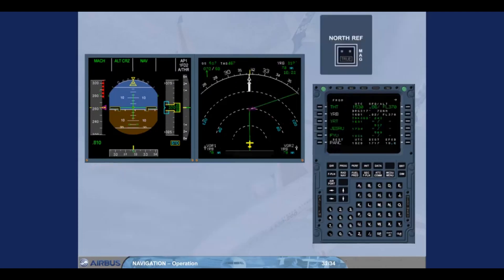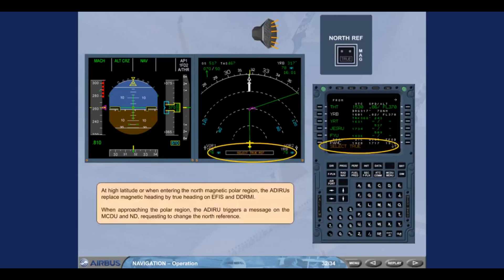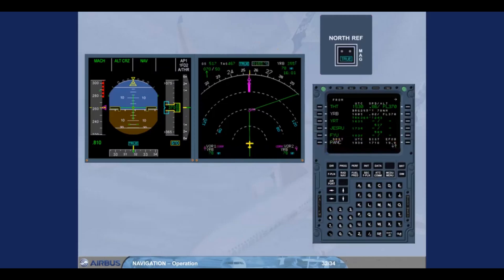At high latitude, or when entering the North Magnetic Polar Region, the ADIRS replaces magnetic heading with true heading on the EFIS and DDRMI. When approaching the polar region, the ADIRU triggers a message on the MCDU requesting to change the north reference. When true is selected, true heading is displayed on the instruments. The heading value has changed and a TRUE label is displayed above the heading scale on the PFD and ND.